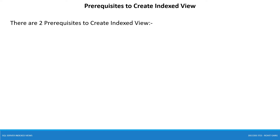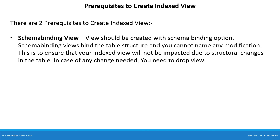There are two prerequisites to create an index view. First: schema binding. Views should be created with the schema binding option. Schema binding locks the table structure so you cannot make any modifications. This ensures that your index view will not be impacted by structural changes in the table. If any changes are needed, you need to drop the view first.